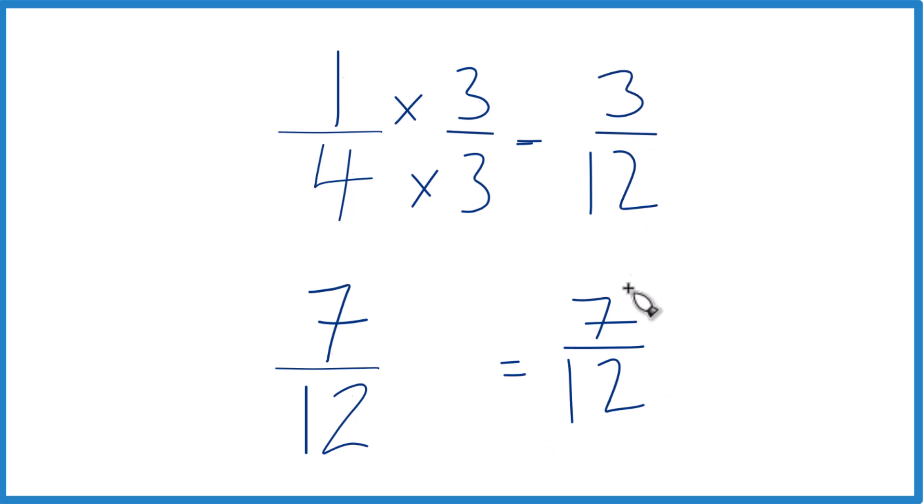Now, same denominator. We can see 7 is bigger than 3, so 7/12, that's bigger than 3/12. And since these are equivalent fractions, they have the same value, these are the same, we can see that 7/12, that's also going to be bigger than 1/4.